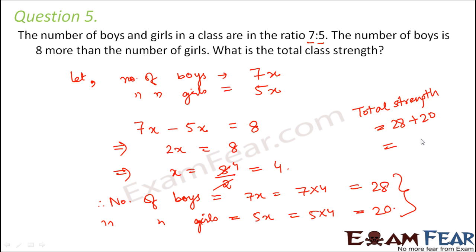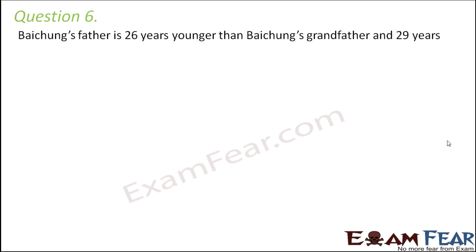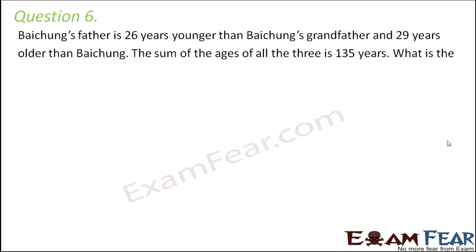The total strength would be equal to the number of boys plus the number of girls, that is 28 plus 20 which equals 48. Question number 6: Bijuse's father is 26 years younger than Bijuse's grandfather and 29 years older than Bijuse. The sum of the ages of all three is 135 years. What is the age of each of them? Here we have three people involved.